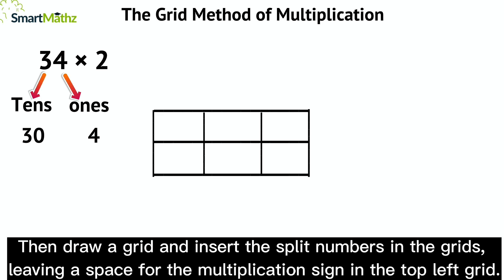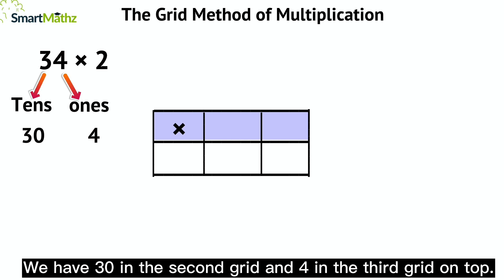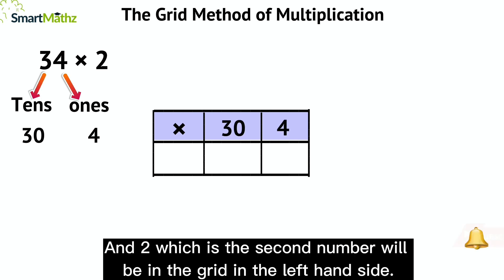Then draw a grid and insert the split numbers in the grids, leaving a space for the multiplication sign in the top left grid. We have 30 in the second grid and 4 in the third grid on top, and 2, which is the second number, will be in the grid on the left-hand side.